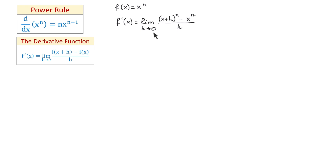Now to evaluate the limit, we cannot use direct substitution because if we replace each h with 0, it will cause both the numerator and the denominator to become 0. If we replace h with 0 in the numerator, we get x to the n-th power minus x to the n-th power, which is 0, and the denominator becomes 0 as well. So we need to simplify the numerator and factor out h so that h can cancel.